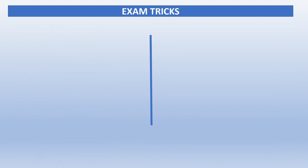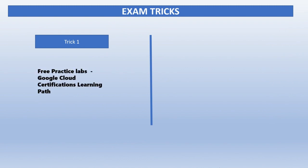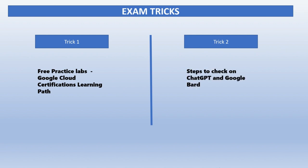Now we come to the tricks. Trick one is very important: you will get free practice labs. I've given a link in the description — there is a Google Cloud Certification Learning Path through which you can get labs. Trick two is about ChatGPT and Google Bard. During the exam, if you're unsure about some steps, you can take help from ChatGPT or Google Bard. I prefer Google Bard because this is a Google certification and Bard may have more up-to-date data than ChatGPT, which only has data up to 2021.